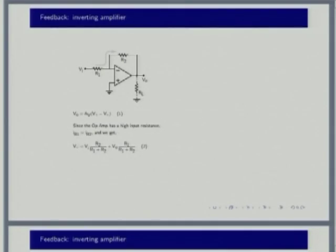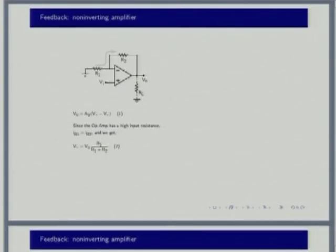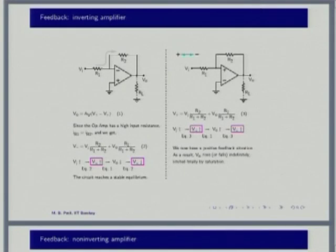In the precision rectifiers, we had one circuit where the op-amp went into saturation, and other circuits where the op-amp did not go into saturation. The circuits that remain in the linear region are faster. Now let us look at some other circuits where the op-amp will go into saturation - the Schmitt trigger.